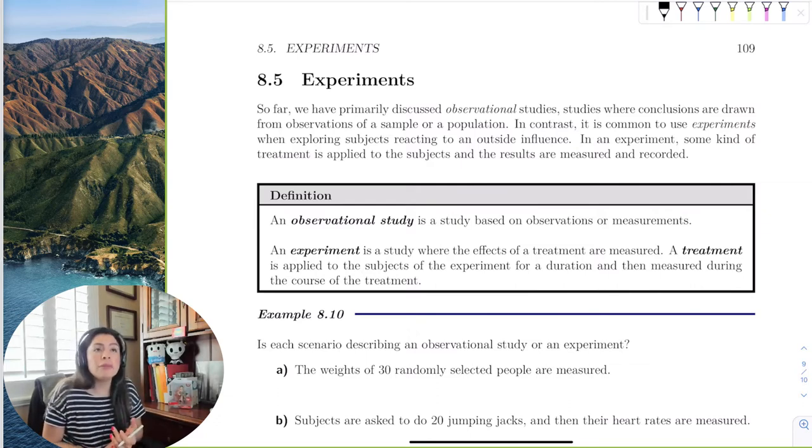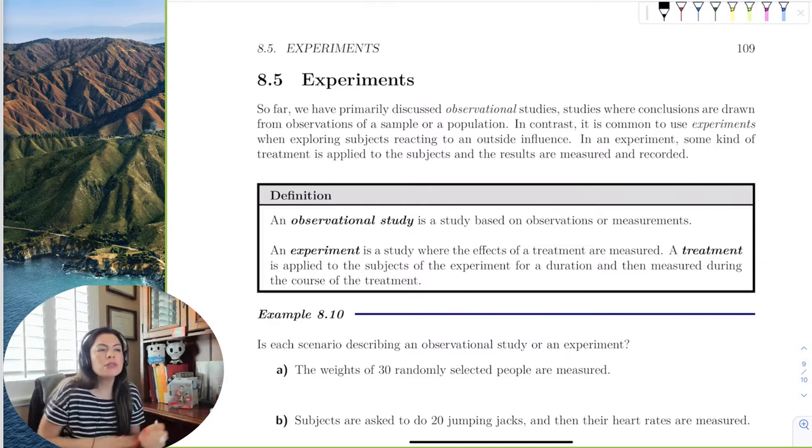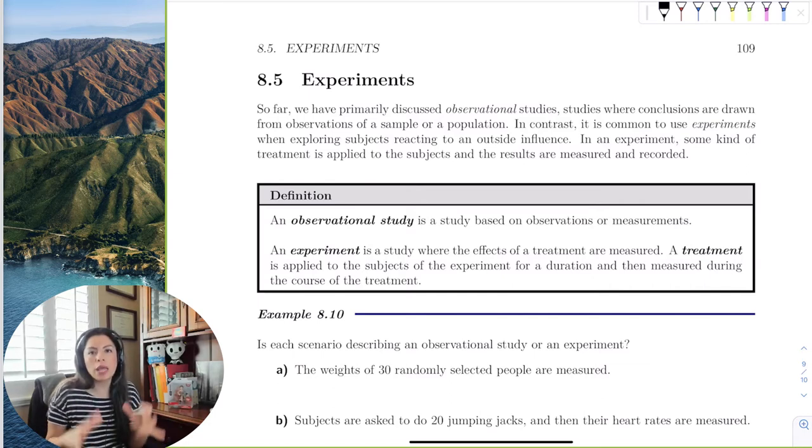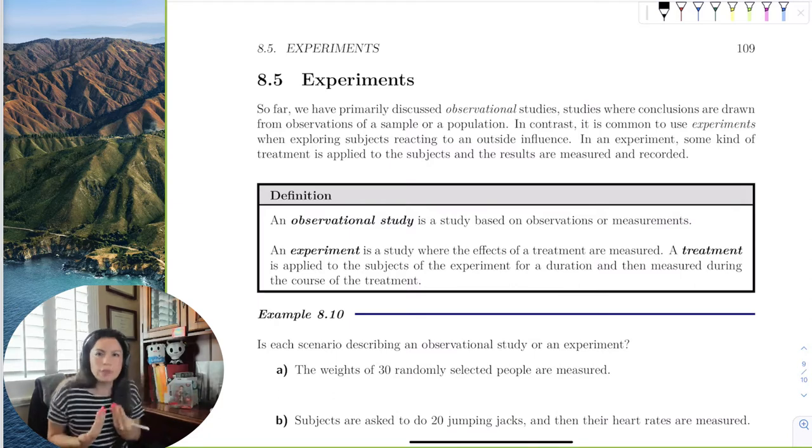So experiments are the other type of study that we could do with research and statistics. But that often means that we're doing a treatment, we're measuring, we have placebo, we have time, we have a lab, right? So experiment, there's a difference between experiment and observational study. Observational study means you're just observing what exists already. You haven't done anything. How tall are you? You've done nothing. You just asked a question, they give you an answer.